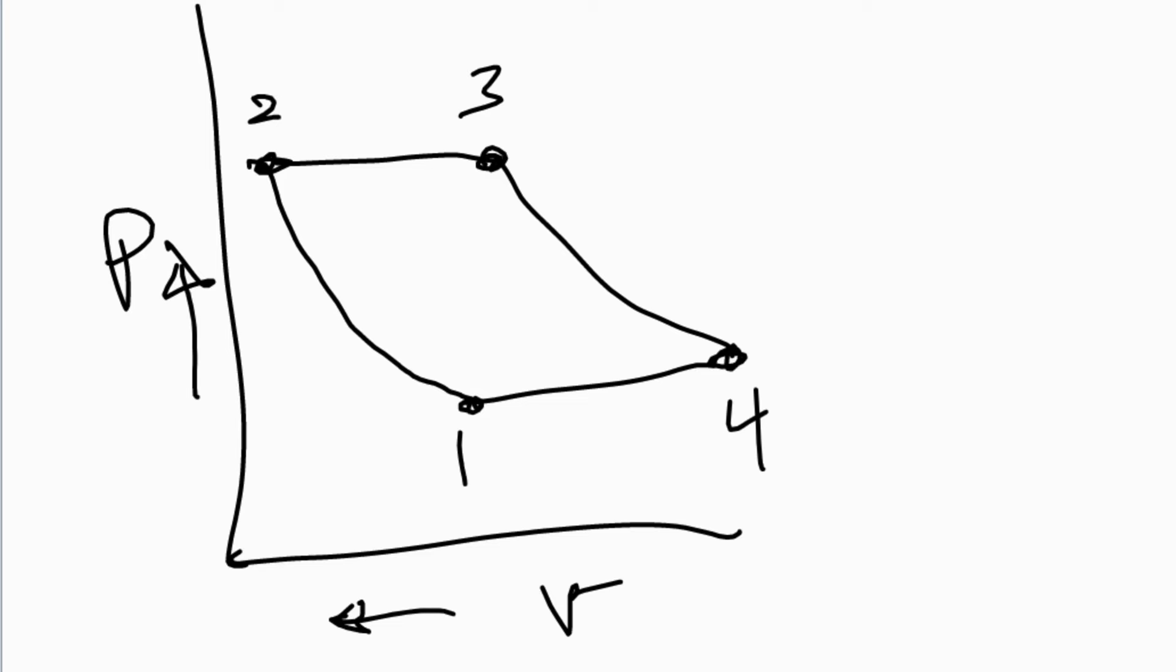So this is where we're going to apply our efficiency. We're going to calculate an ideal cycle. So you come up with all your data for points one, two, three, and four.